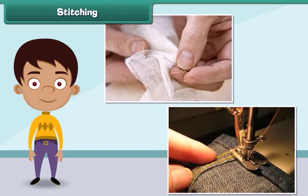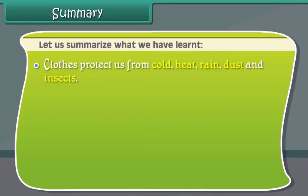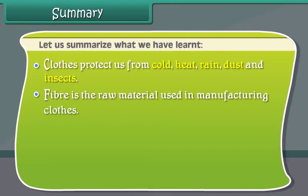Stitching is the process by which fabrics are converted into clothes. It involves sewing a fabric with needle and thread. In olden days, stitching was done by hand, but nowadays stitching is done with machines.